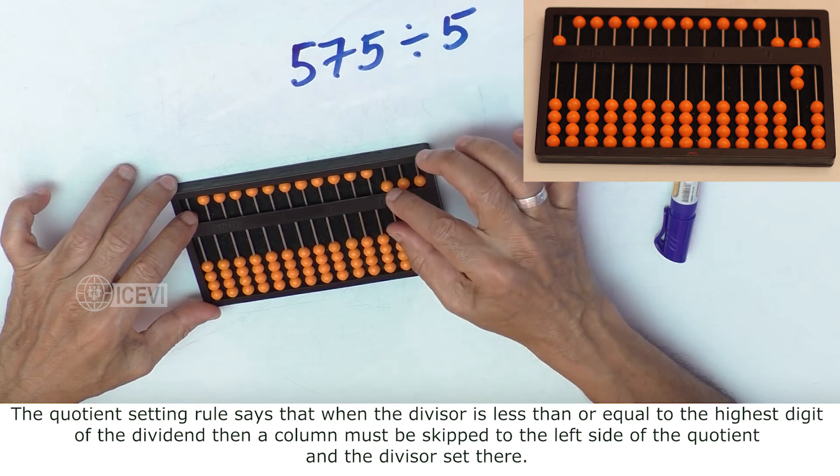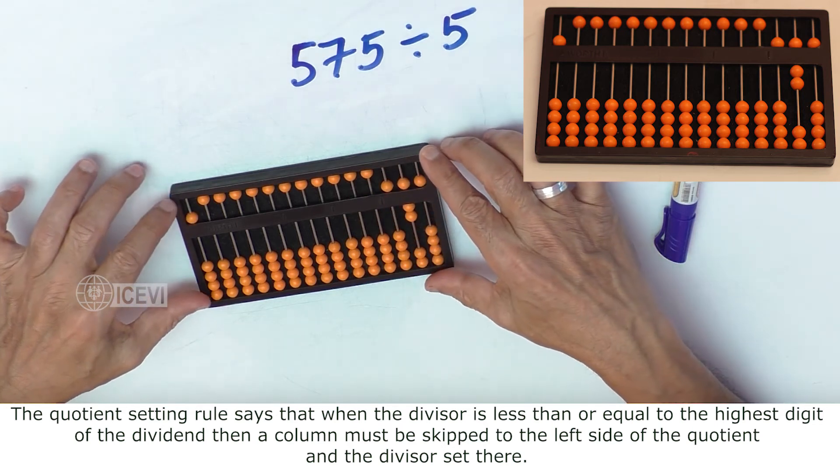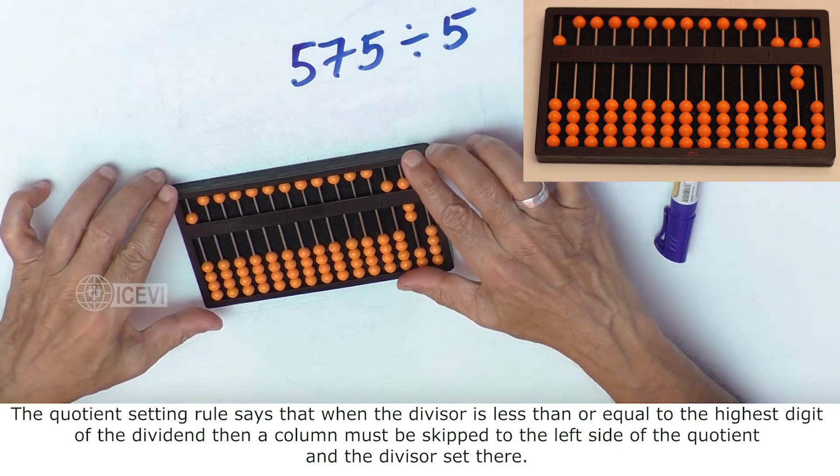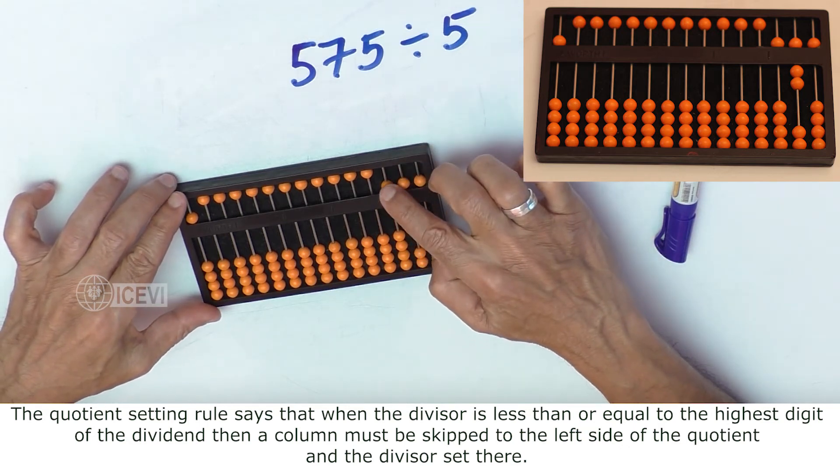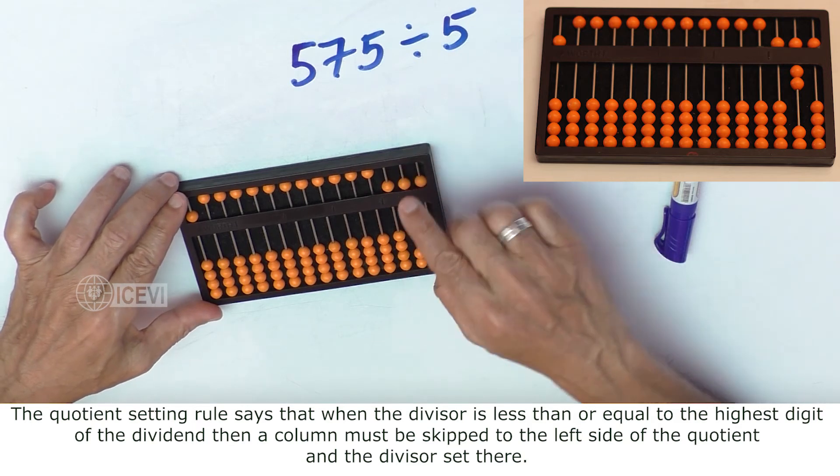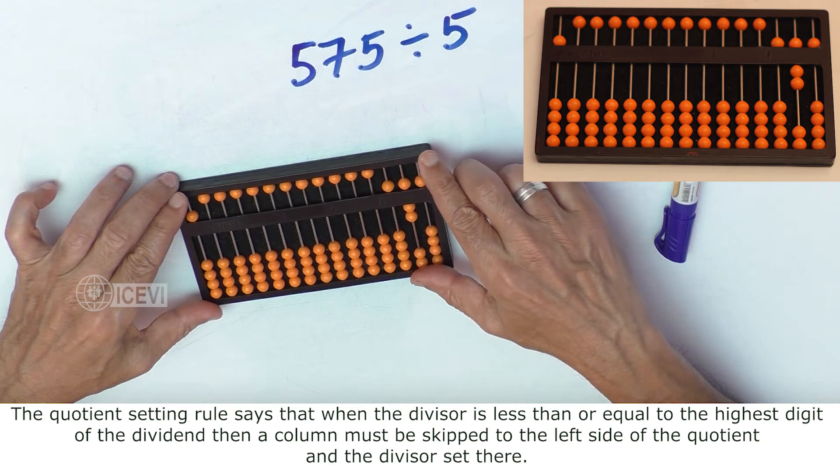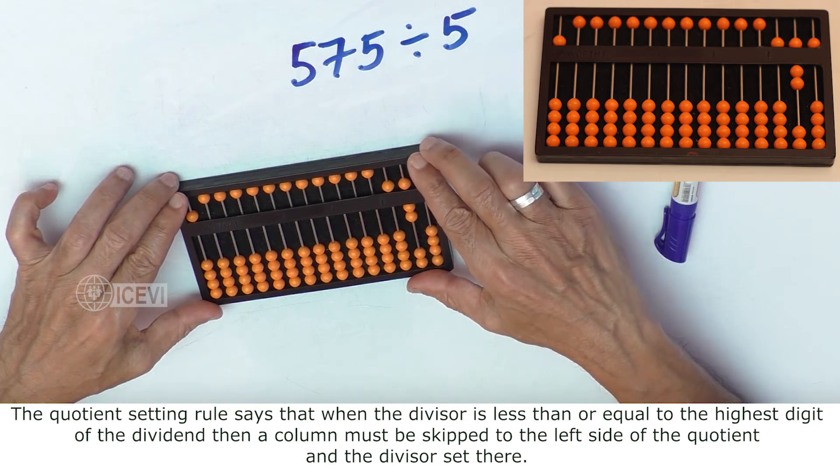The quotient setting rule says that when the divisor is less than or equal to the highest digit of the dividend, then a column must be skipped to the left side of the highest digit of the dividend.